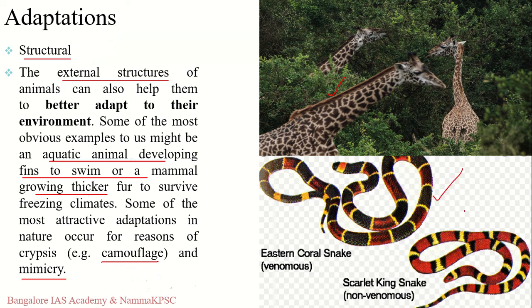In this image you can see two snakes: the coral snake, which is venomous, and the king snake, which is non-venomous. The king snake is mimicking the coral snake so that predators which might attack it will mistake it for the venomous coral snake and leave it alone. The king snake is not venomous but mimics the coral snake in order to protect itself — an adaptation necessary for survival.